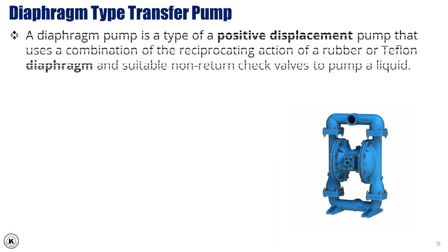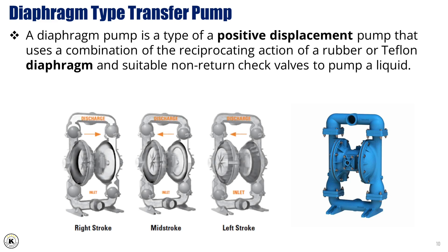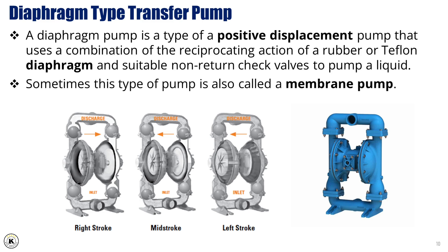Next, we have the diaphragm type transfer pump, which is another form of positive displacement pump. This pump operates using a flexible diaphragm, usually made of rubber or Teflon, that moves back and forth in a reciprocating motion. As the diaphragm retracts, it creates a vacuum that draws the fluid in. Then, as it pushes forward, the fluid is expelled out of the pump. To ensure one-way flow, it uses non-return check valves on both the suction and discharge sides. Because of this design, diaphragm pumps can handle a wide range of fluids, including corrosive or abrasive ones, and are good for applications where leakage-free operation is essential. It is sometimes referred to as a membrane pump.